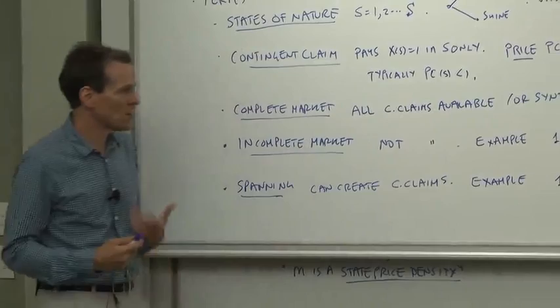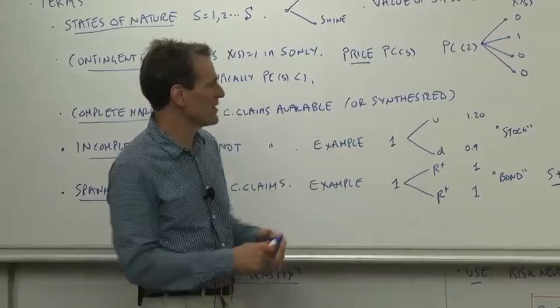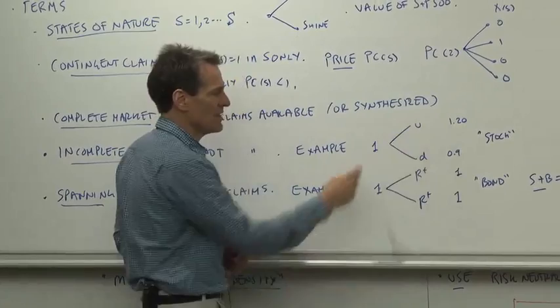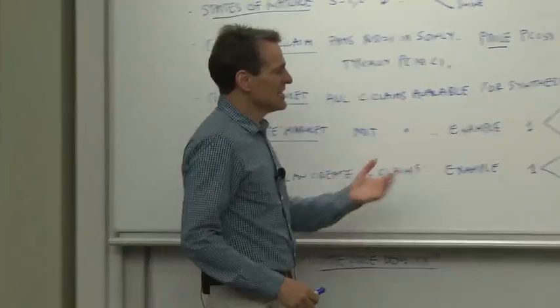So for example, we'll model a stock in many cases. In this binomial model, you put $1 in, and you get U out, maybe $1.20, or D out, maybe $0.90, depending on what happens.